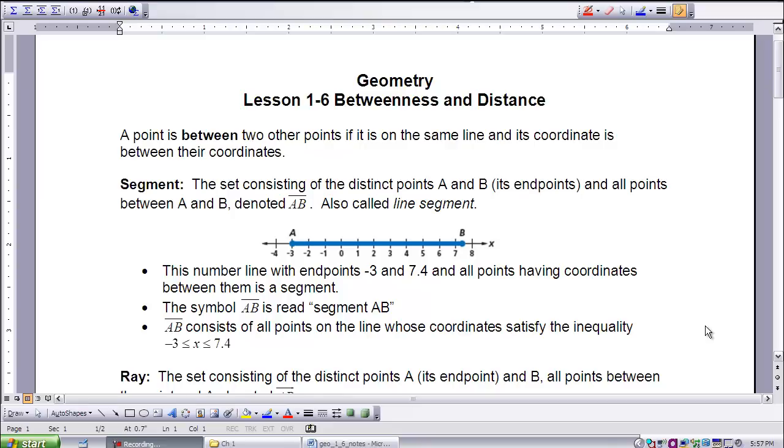First, let's talk about what it means to be between in Geometry. In the reading, it asked the question, is Chicago between Los Angeles and New York? Often people would say yes. In Geography, a Geography teacher would say that's a reasonable answer. But in Geometry, we need to be very specific. A point is between two other points if it is on the same line, and its coordinate is between their coordinates. So the key here is that in order for points to be between each other, they need to lie on the same line.